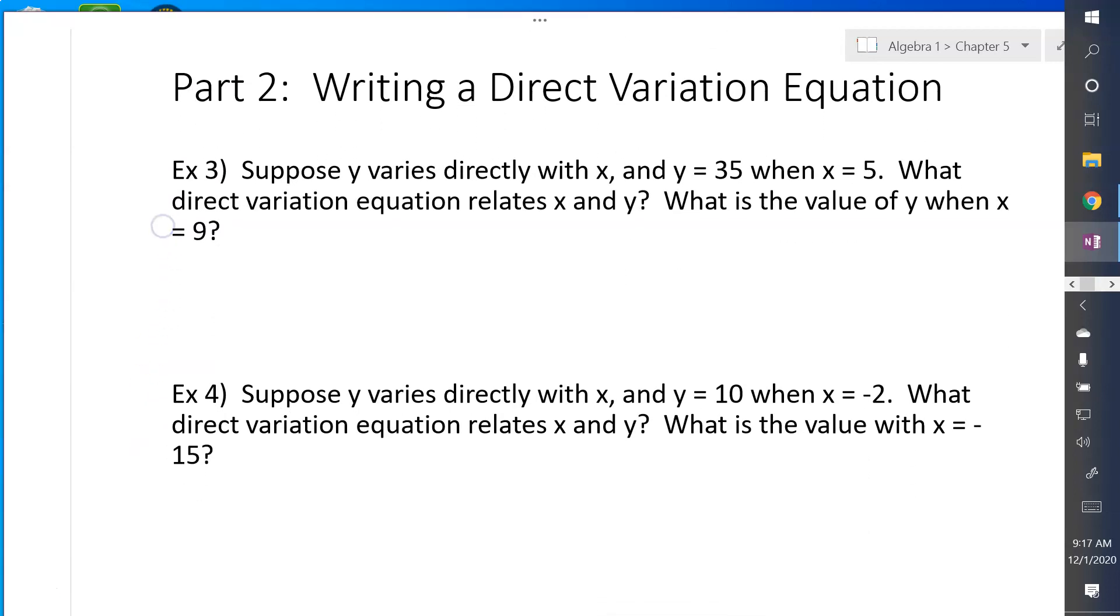Now we're going to write a direct variation equation. So suppose y varies directly with x. When I see that, I know right away I'm going to have a y equals kx situation. And y equals 35 when x equals 5. So this means that 35 is going to be k times 5. So I can solve for k. Just divide both sides by 5 and I get 7 equals k. So my constant of variation is 7. So what's the equation that directly relates x and y? That would be y equals 7x.